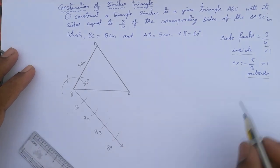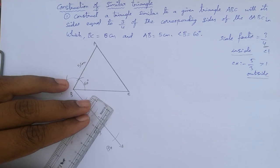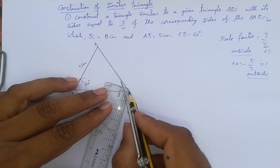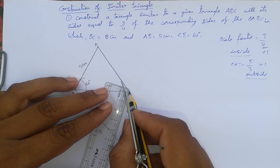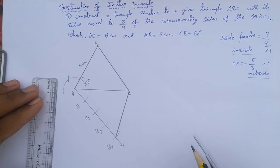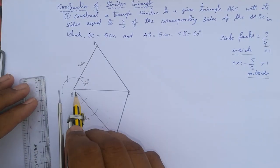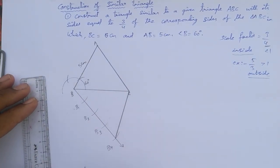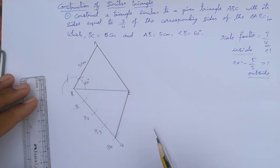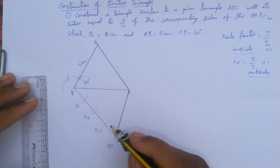Since the scale factor is 3/4, we work with the third point. First, join B4 and C. Now we need to draw a line from B3 parallel to B4C to meet BC — but we don't know the angle, so the line through B3 must be parallel to B4C.